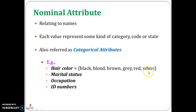Since we choose the data from a category or given set of values, we call it a categorical or nominal attribute. Similarly, the marital status of a person can be either single, married, divorced, or widowed — these are the various categories in marital status, making it a categorical attribute.